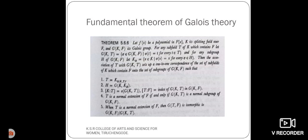Then, the association of T with G(K,T) is a one-to-one correspondence of the set of subfields of K which contains F onto the set of subgroups of G(K,F) such that the five conditions are satisfied.